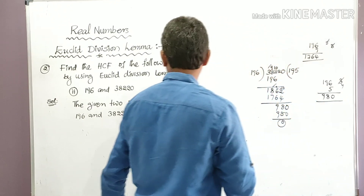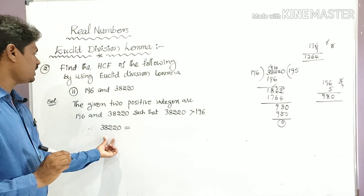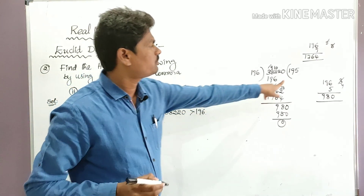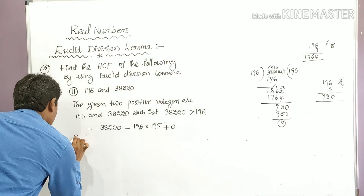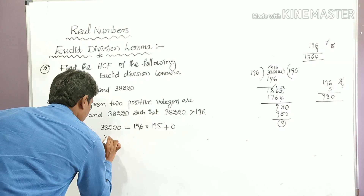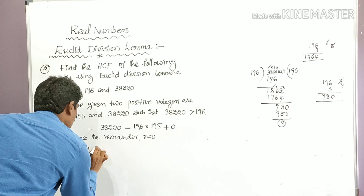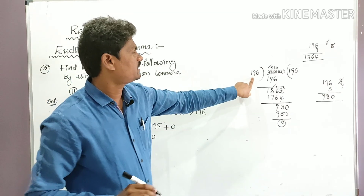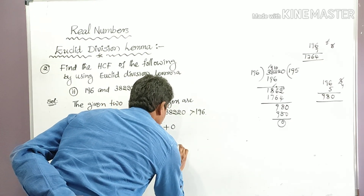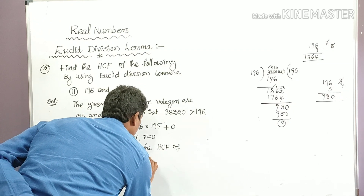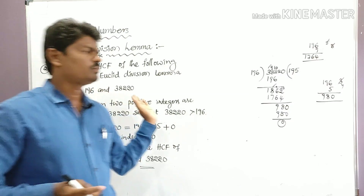Therefore we can write: 38,220 = 196 × 195 + 0. Since the remainder r = 0, therefore the divisor 196 is the HCF of 196 and 38,220. So 196 is the HCF of the given two positive integers.